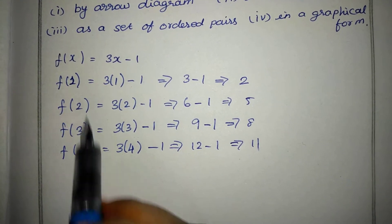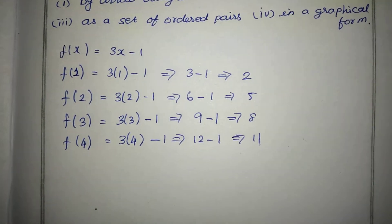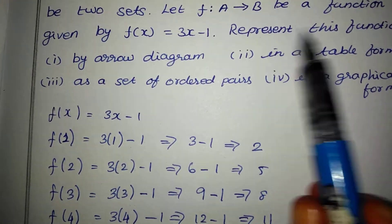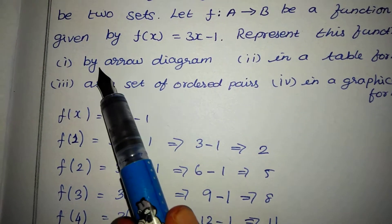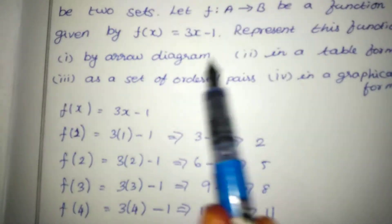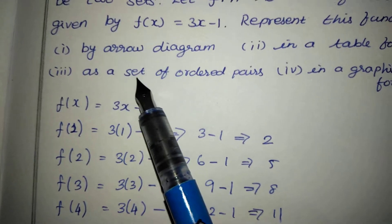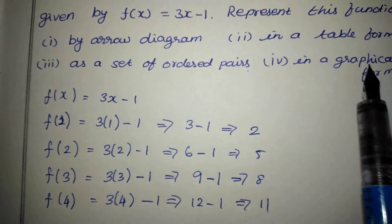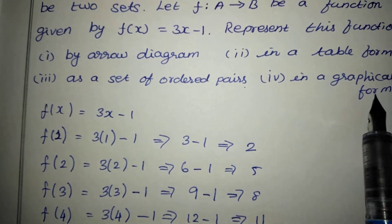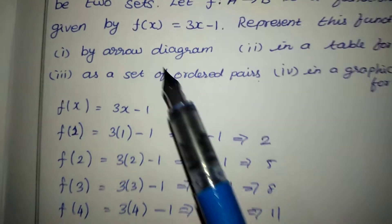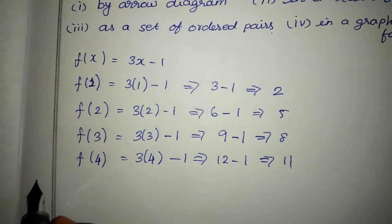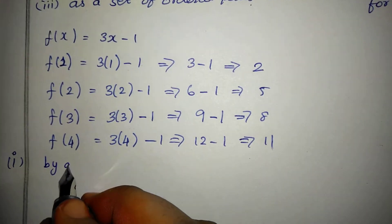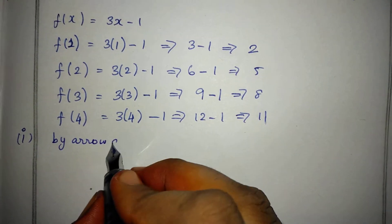Now we are going to represent this function in four ways: by arrow diagram, in table form, as a set of ordered pairs, and in graphical form.